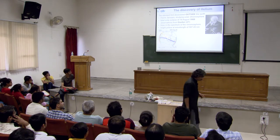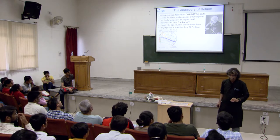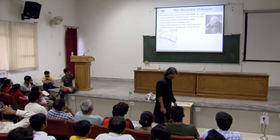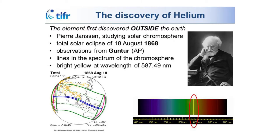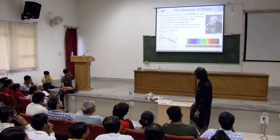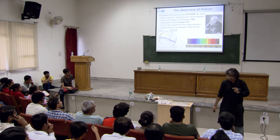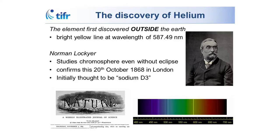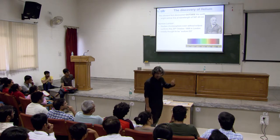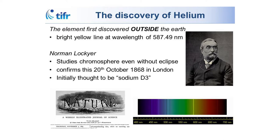A few stories about this — we'll start with helium, because helium is the only element found from India and the first element found outside the Earth before it was detected on Earth. This happens during a solar eclipse observed from Guntur in Andhra Pradesh in 1868. Pierre Janssen observes a very bright line in the solar spectrum at 587-point-something nanometers — you know sodium gives you bright yellow lines, so he initially thinks it's some form of sodium. Norman Lockyer from England observed this again and also thought it was sodium. Eventually both realized it was a new element — since it's there in the sun, helios meaning the sun, it's called helium. Lockyer is also more famous because he started a journal called Nature.